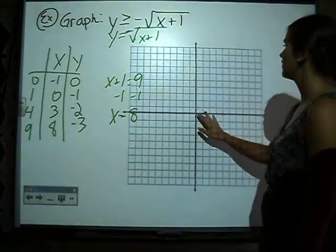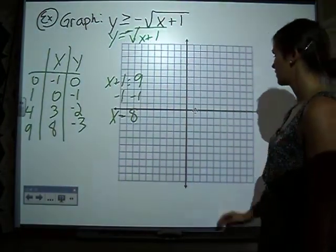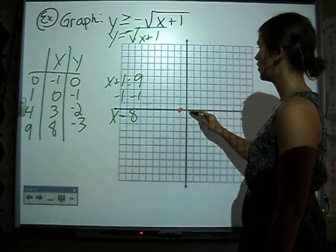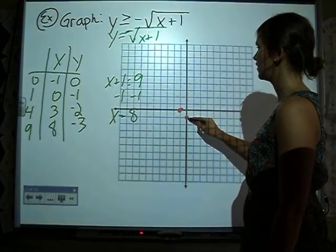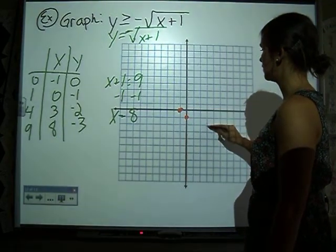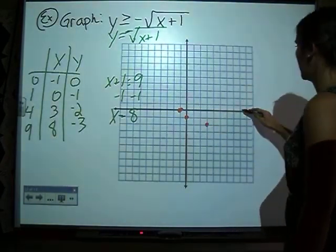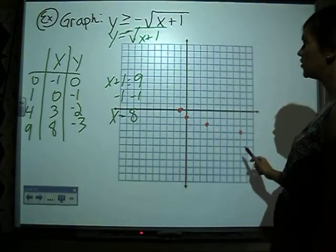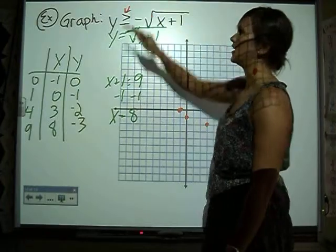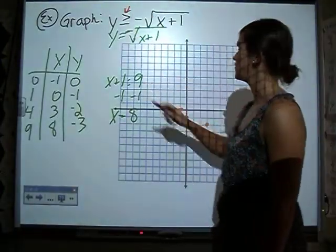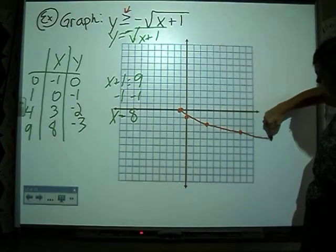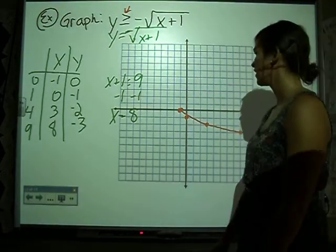If we graph this over here, I'm going to be at negative 1, 0, then 0, negative 1, then 3, negative 2, and 8, negative 3. Once you have a graph, go back here. I'm going to use a solid or a dashed line. This has equal to, so I'm going to use a solid line.